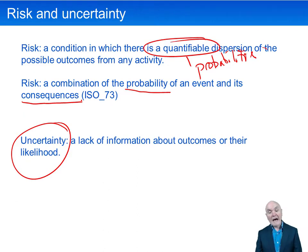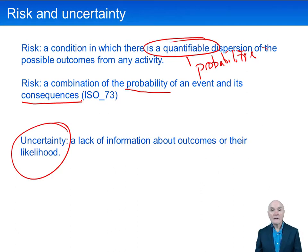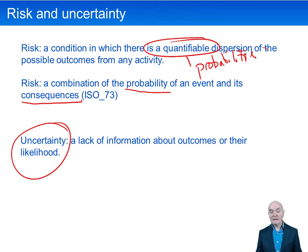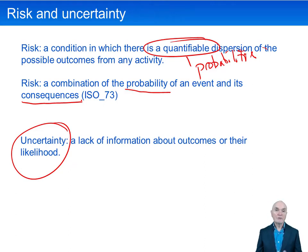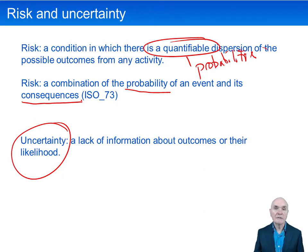Or there could be a high probability of something happening where the consequences are relatively small. For example, when washing up a cup, maybe you drop it or chip it on the tap — but by and large, it's a fairly trivial event and we just don't worry about that.